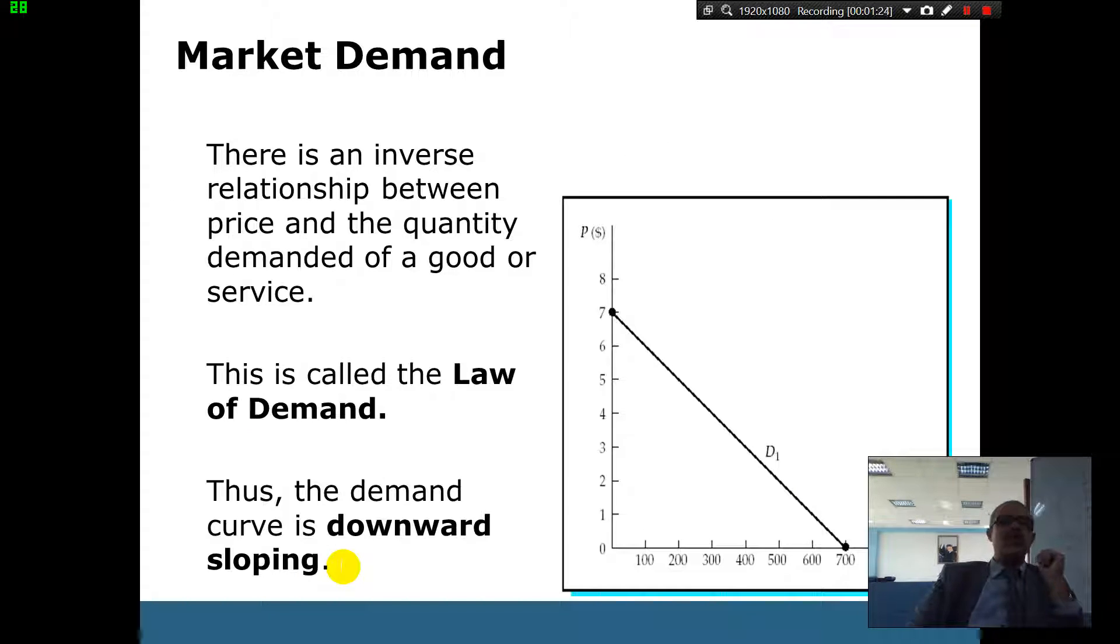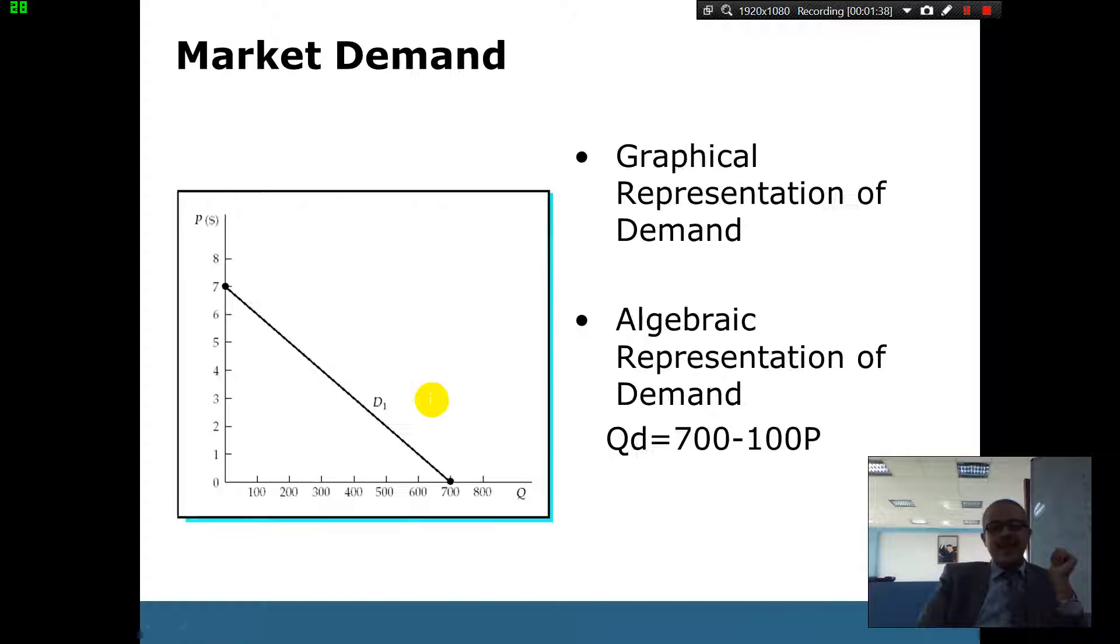And this shows you on a straight line to make it simple, easy numbers. If the price is zero, 700 quantity is demanded. And if the price is seven, maybe no one will buy. But if it's a six, maybe 100 people will buy. And that's the law of demand, and it's downward sloping.